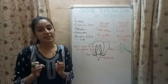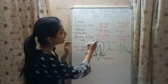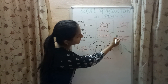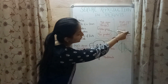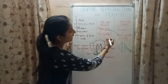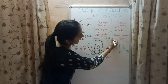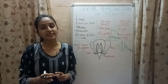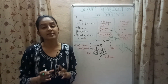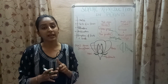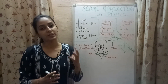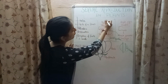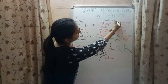During the process of sexual reproduction in plants, the male gametes present inside the pollen grains fuse with the female gametes present inside the ovule, and this process is known as fertilization. As a result of fertilization, a seed is formed. This seed, when it gets appropriate conditions like proper temperature, light, water, and air, germinates to form a new plant.